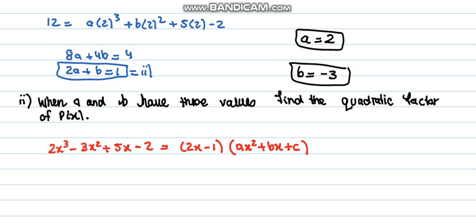Now what we can do is simply compare the coefficients. Now comparing the coefficients of x³, x³ is 2 over here, and over here the x³ would be 2a. So the value of a would be 1.